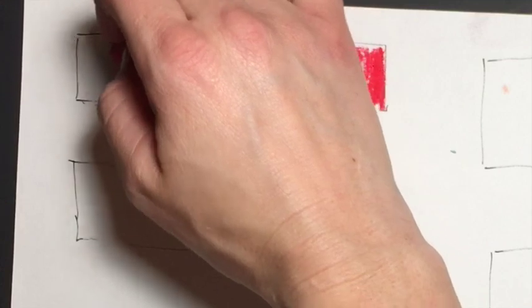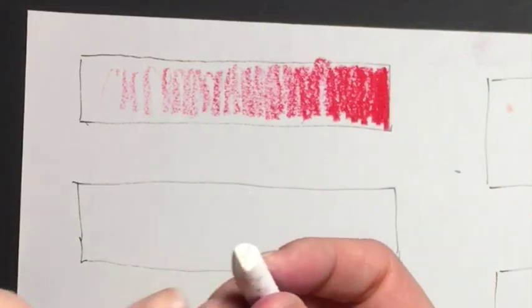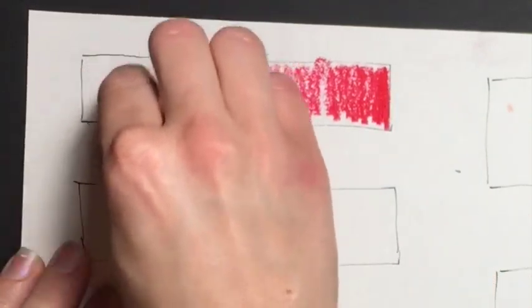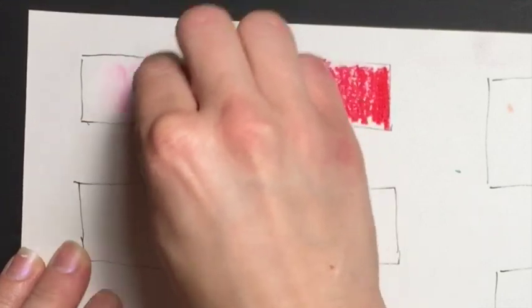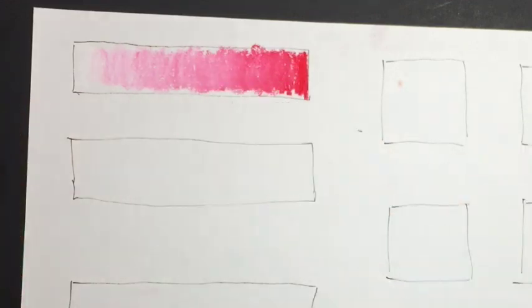I'm just barely touching it. So press hard, and then slowly press lighter as you go this direction. Then take your white and make sure it's clean. And I like to swirl when I do this, and just go into the red. Well, there you have using white and a color.